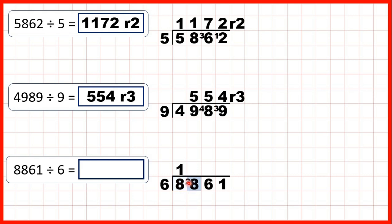Now we have 28 divided by 6. We need to think of a number in the 6 times table which is as close to 28 as possible, but not more than 28. The closest number that's still less than 28 is 24. And because 4 times 6 is 24, we write 4 in our answer line. But 4 times 6 is 24 and we need 4 more to get to 28, so our remainder is 4.